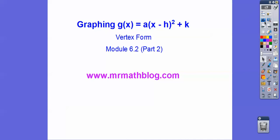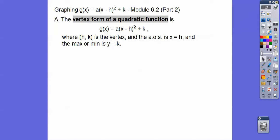All your lessons can be found at mrmathblog.com. This is called the vertex form of a quadratic equation: g of x equals a times x minus h squared plus k, where (h, k) is the vertex, and the axis of symmetry is x equals h.